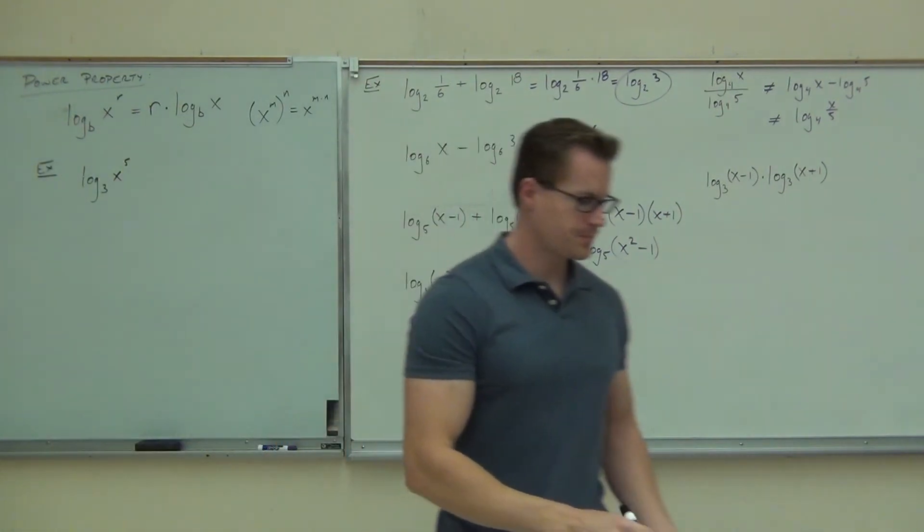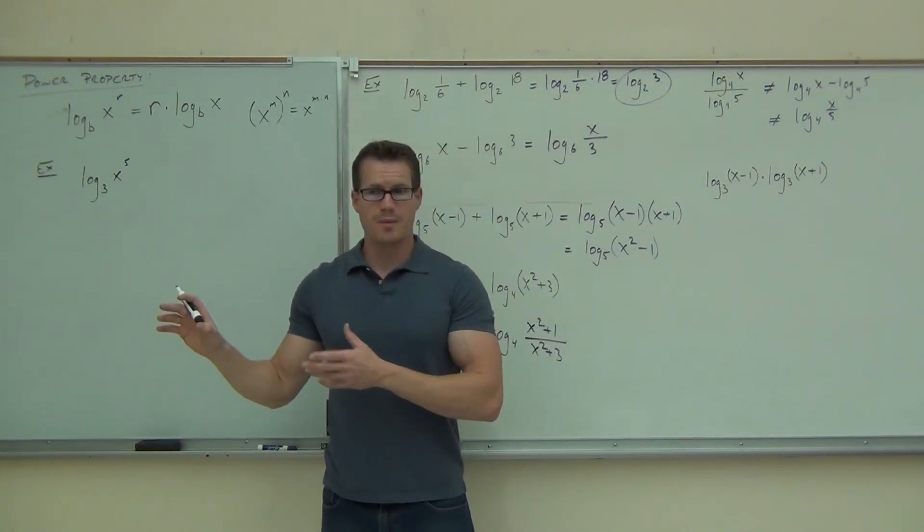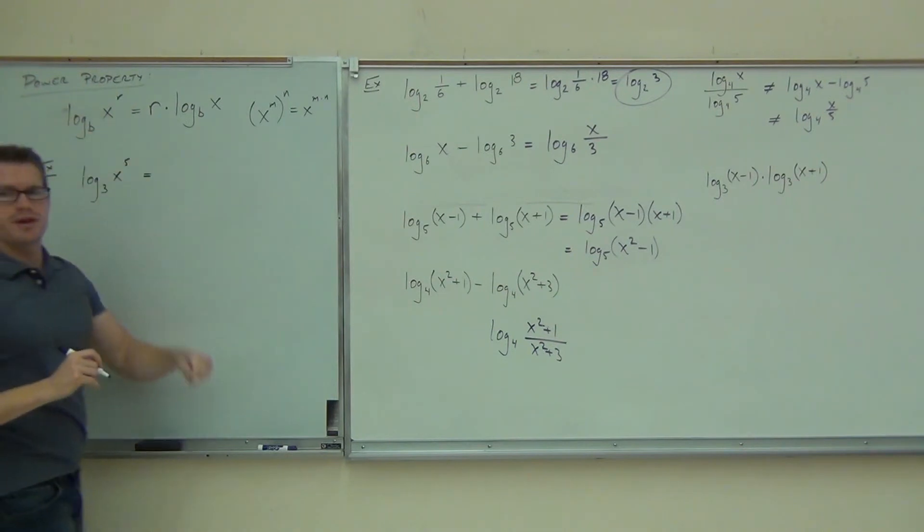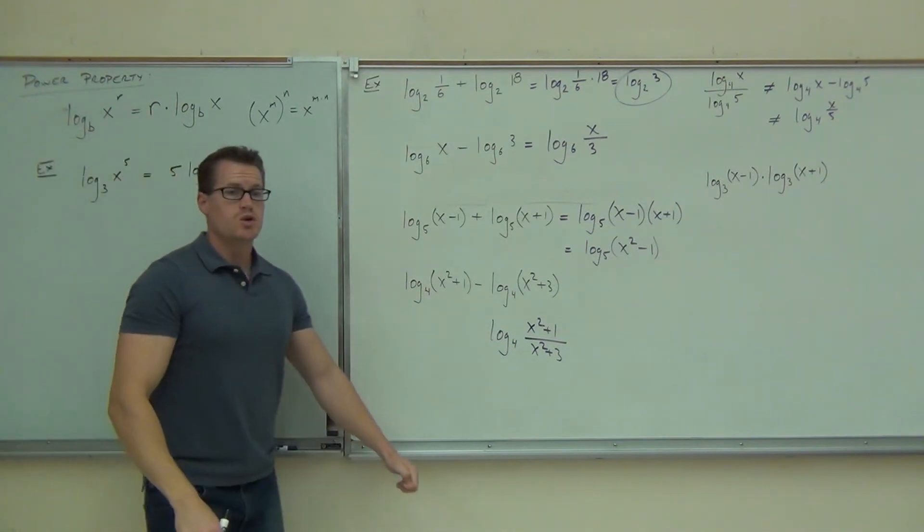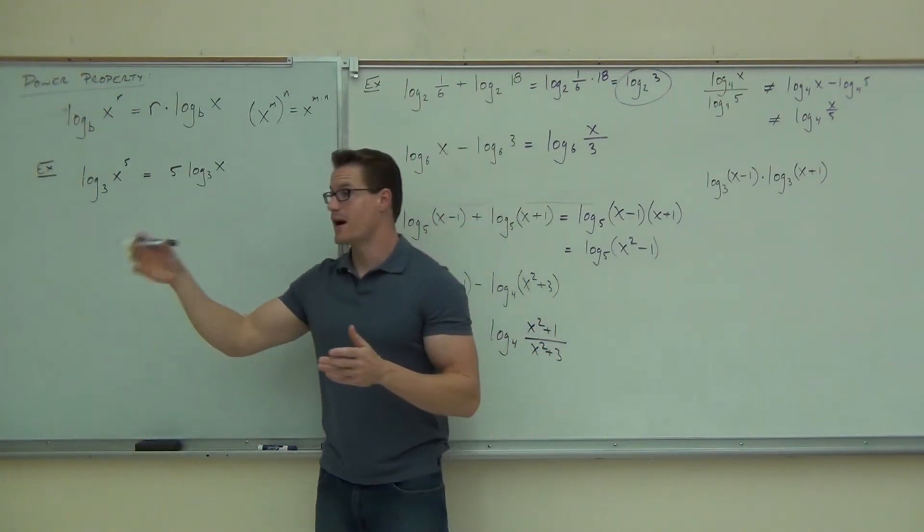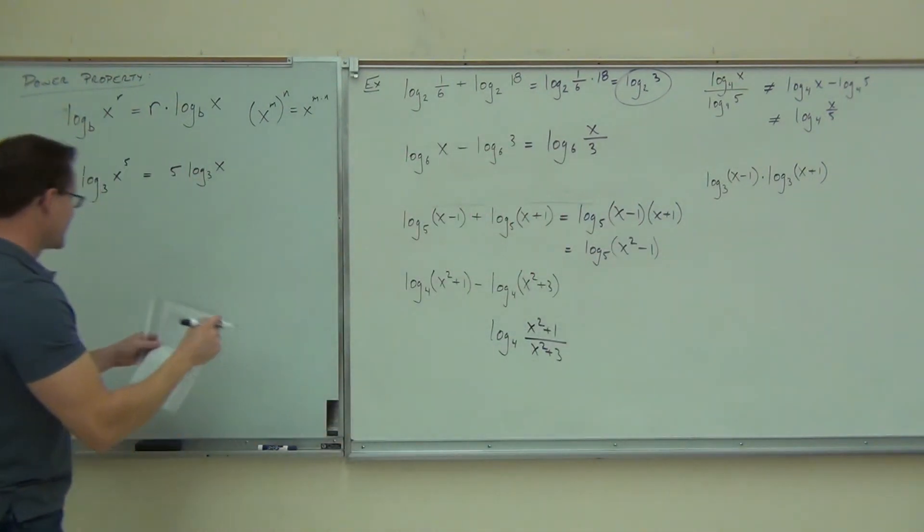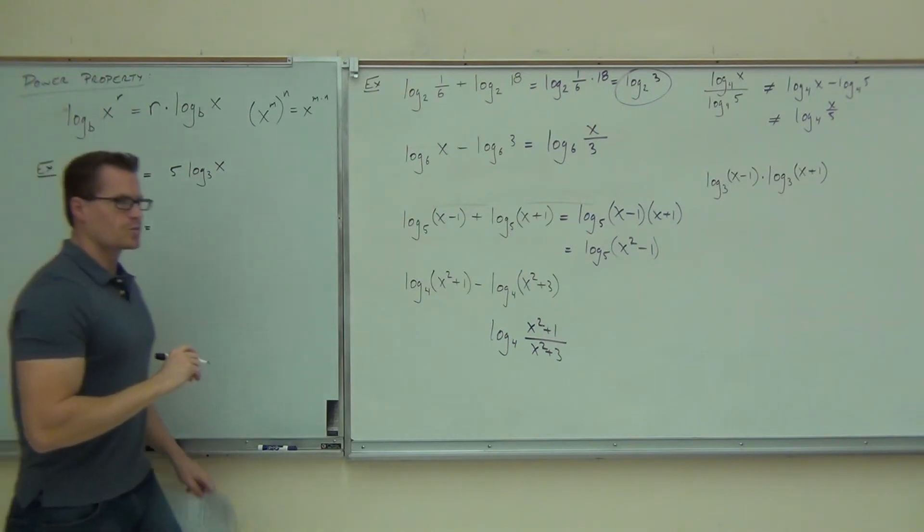Okay, log base 3 of x to the 5th. Is there an exponent there that I can move? Does it fit into the power property? Remember, if it doesn't fit exactly, you can't do anything with it. But this one fits exactly. This says I have some expression with an exponent. What can I do with that exponent? That's it. And it's like you're multiplying exponents here. 5 times log base 3 of x. You can put 5 times a little dot, put 5 right next to anything. It's typically understood to be multiplication, and it is here as well. So 5 log means 5 times log base 3 of x. You all right with that one? This is a cool one. It's a cool property.